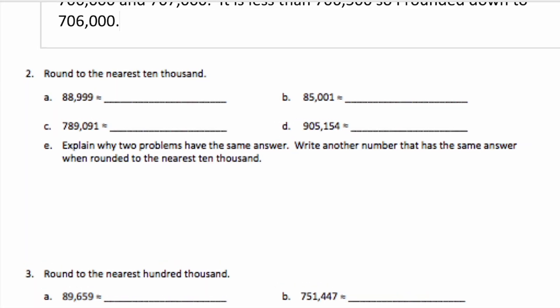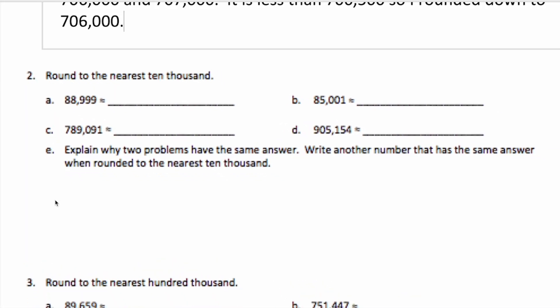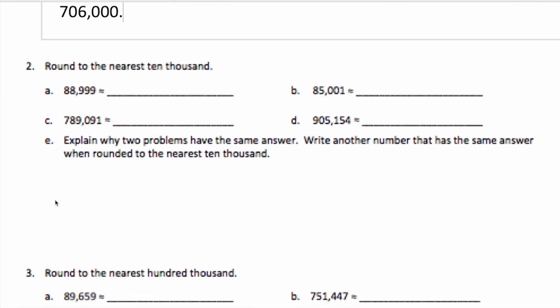We're rounding to the nearest 10,000. So this time we're going to be counting the number of 10,000s. For A, we have eight 10,000s, so this is between 80,000 and 90,000. Half of 10,000 is 5,000, and this is more than 5,000, so I would round up to 90,000.